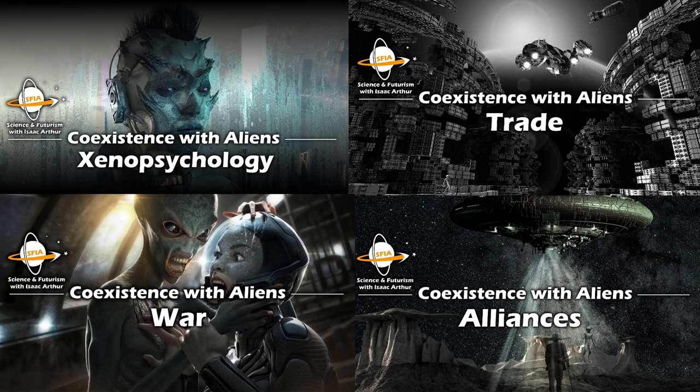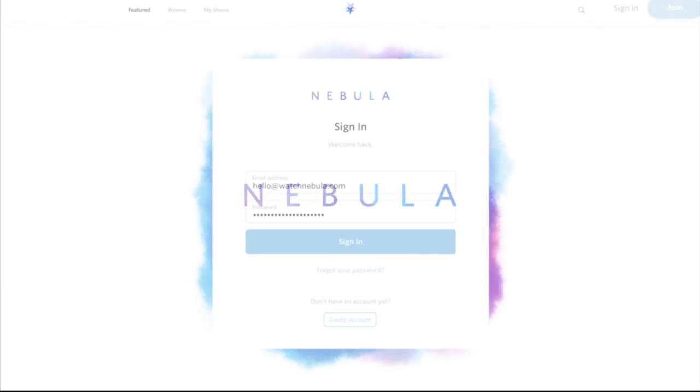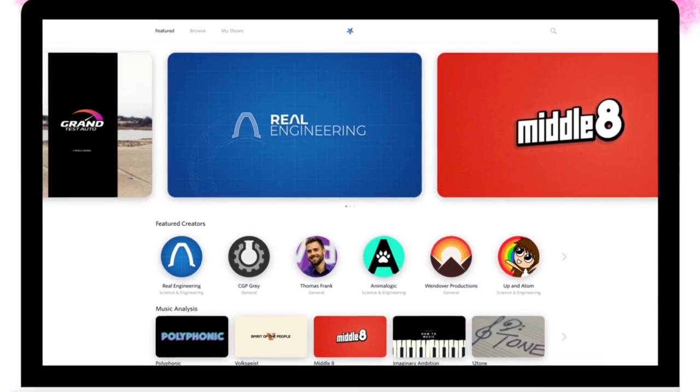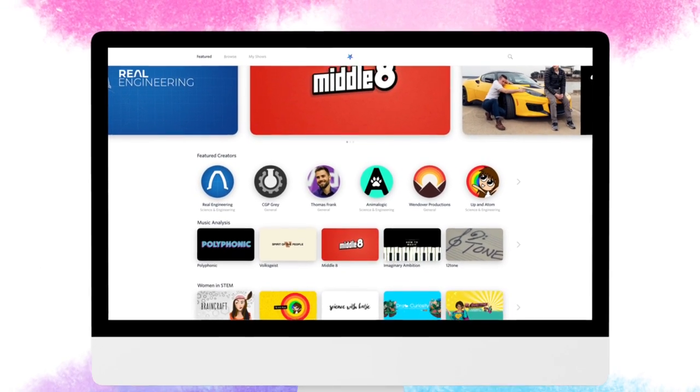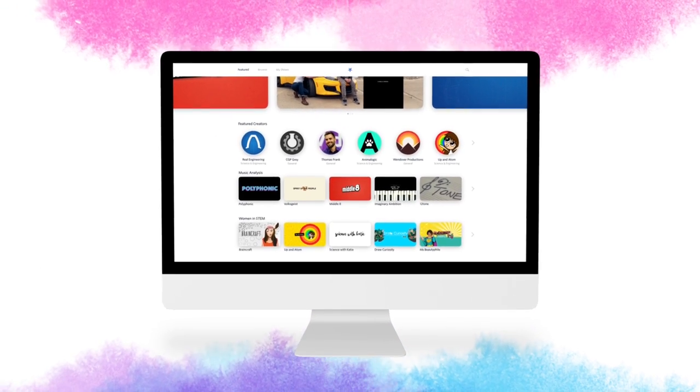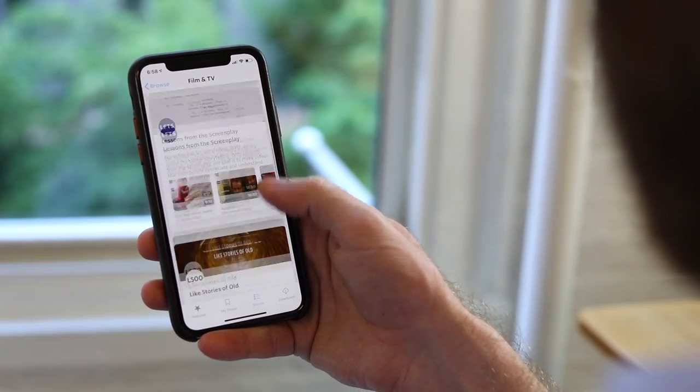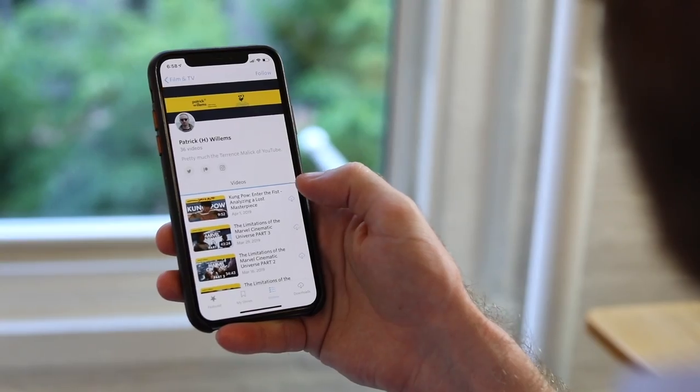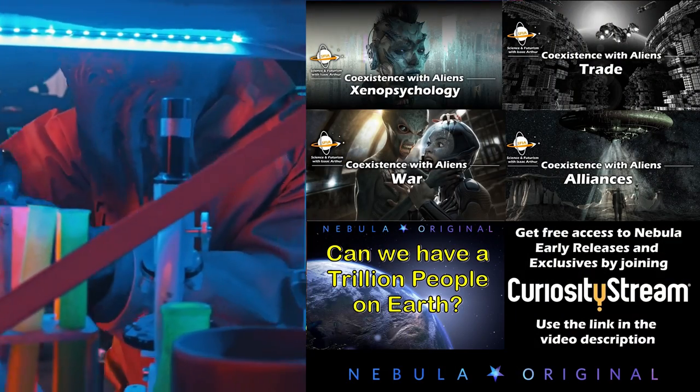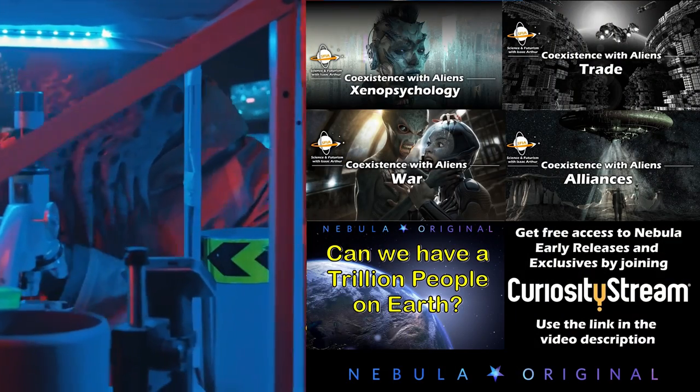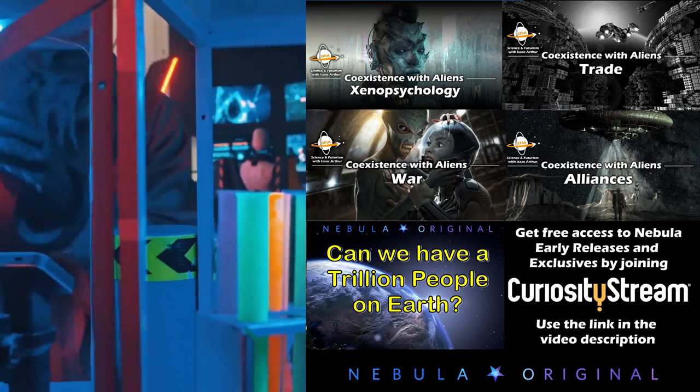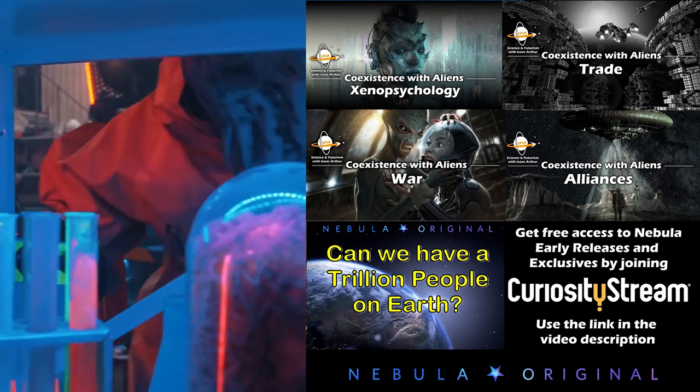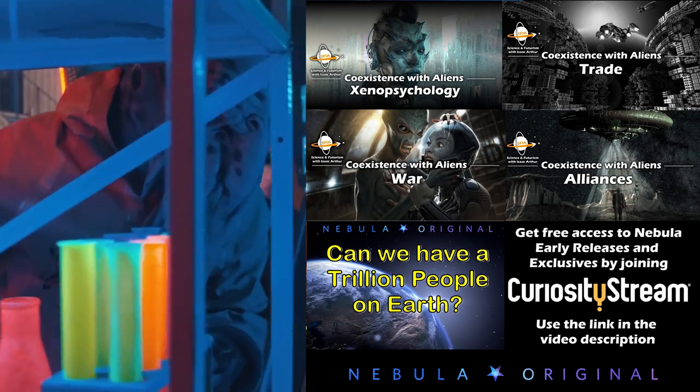Nebula, our new subscription streaming service, was made as a way for education-focused independent creators to try out new content that might not work too well on YouTube, where algorithms might not be too kind to some topics or demonetize certain ones entirely, or just doesn't fit our usual content. SFIA uses it principally for early releases of episodes, such as Can We Have a Trillion People on Earth, as well as Nebula-exclusives like our four-episode Coexistence with Aliens series.